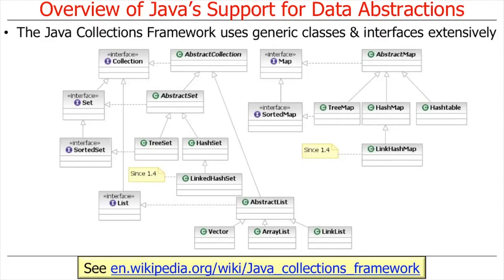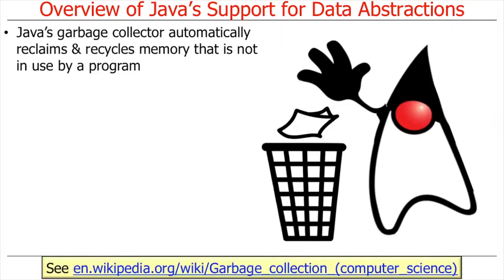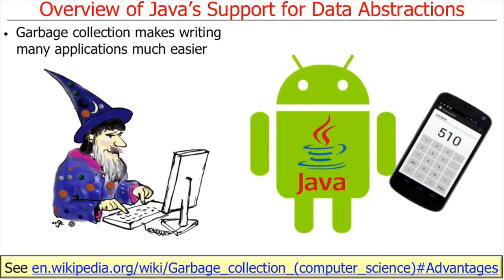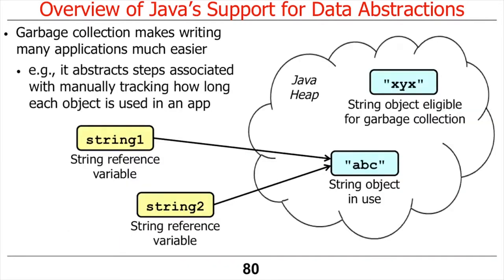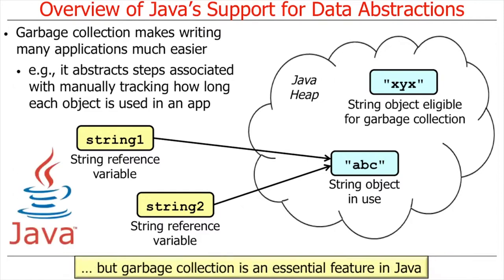The Java Garbage Collector supports yet another form of data abstraction. Garbage collection is a memory management mechanism that automatically reclaims and recycles objects not currently in use by an app. Java's Garbage Collector makes it easier to write apps by alleviating tedious and error-prone aspects of releasing dynamically allocated memory in languages like C that lack garbage collection. Not all object-oriented languages support garbage collection, but it's an essential feature of Java.